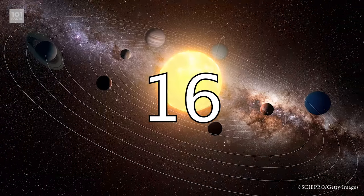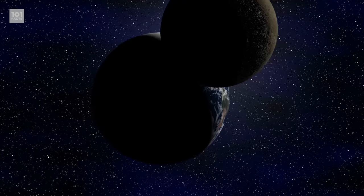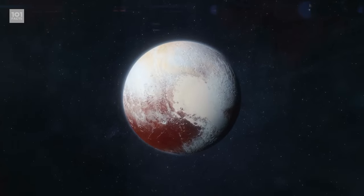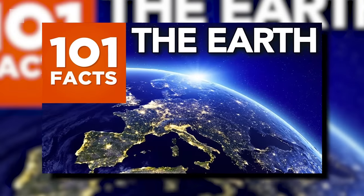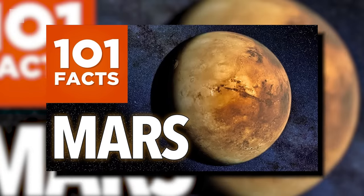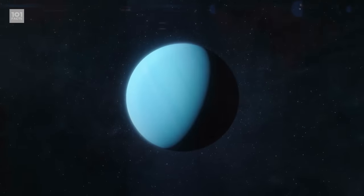The solar system is made up of four terrestrial planets, four giant planets, and the dwarf planet Pluto. The four terrestrials are Mercury, Venus, Earth, and Mars. And the four giant planets are Jupiter, Saturn, Uranus, and Neptune.